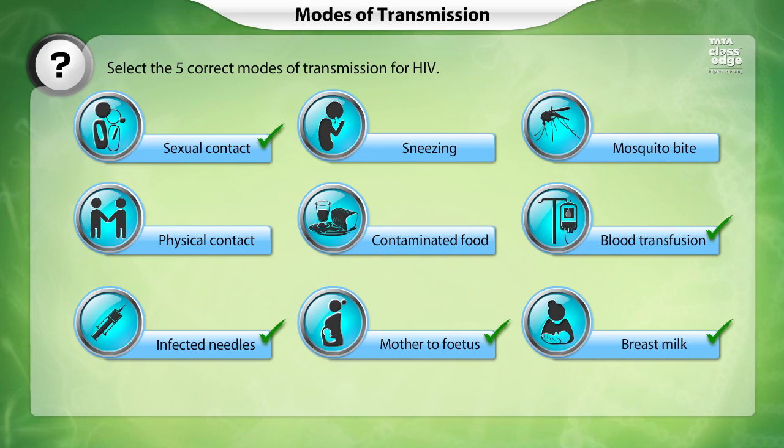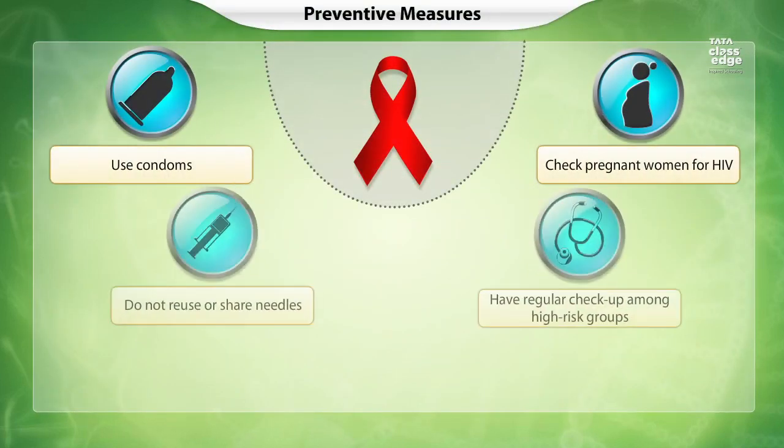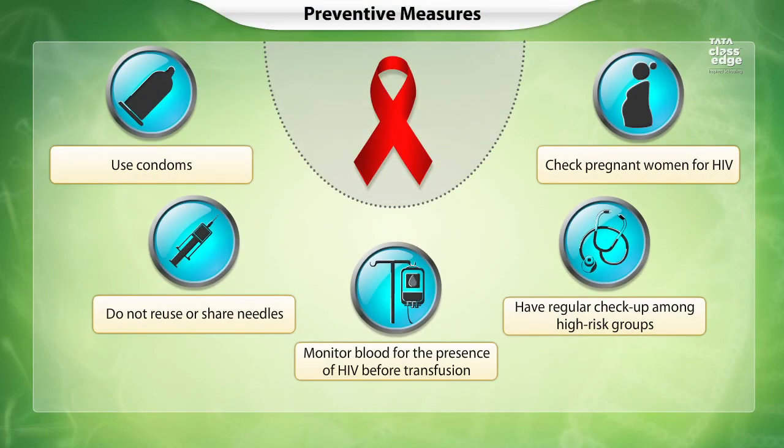HIV is transmitted through body fluids. These are the modes of transmission of HIV. As there is no cure for this disease, it's best controlled by adopting preventive measures.